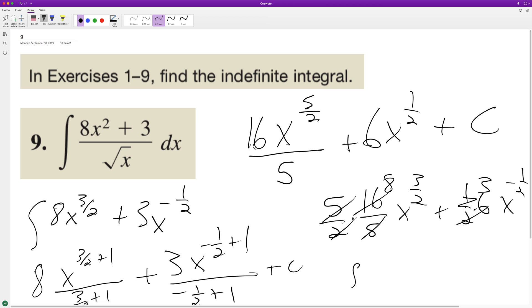We're left with eight x raised to the three halves plus three x raised to the negative one half, and that works. That means this is correct. I hope this helped you out, thanks for watching, and have a great day.